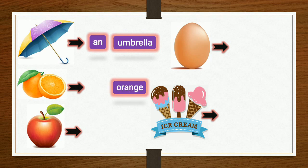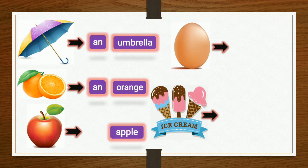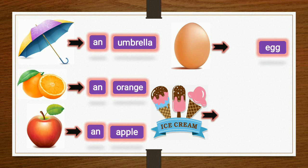Next is orange. The first letter is O, so again we use AN. Next is apple — the beginning letter is A, so we use AN — an apple. Then, what is this picture, children? Can you tell me? Egg. Correct! The beginning letter is E, so: an egg.